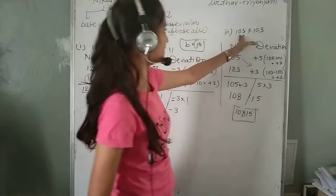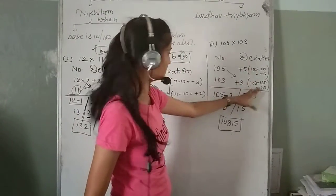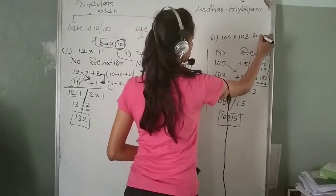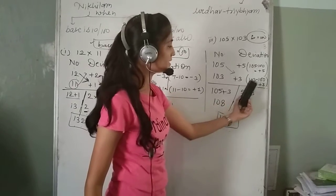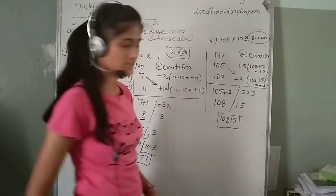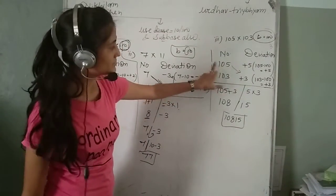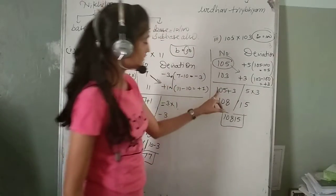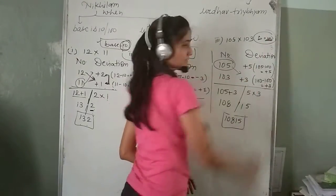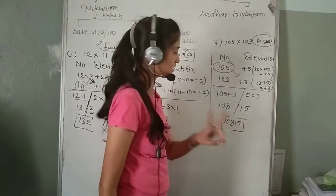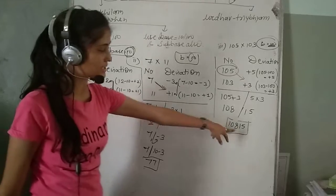Now, if our digits are 105 and 103. We write the numbers and in front we write their deviations. The base is 100. 105 minus 100 gives plus 5. 103 minus 100 gives plus 3. The product of deviations: 5 into 3 equals 15. The opposite deviation added: 105 plus 3 equals 108. Since base is 100, we mark 2 digits at the last part. If there is only 1 digit, we pad with 0. So our answer is 10,815.